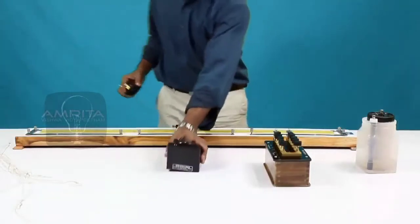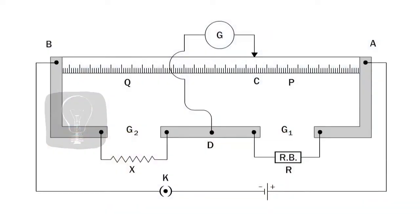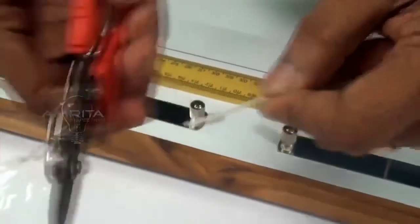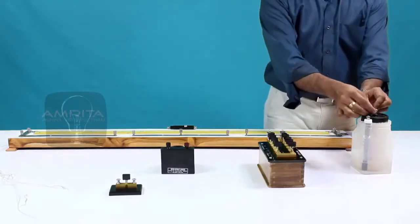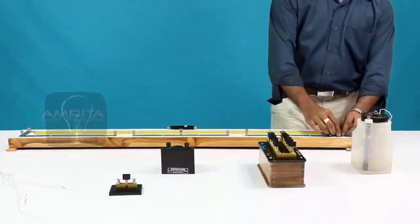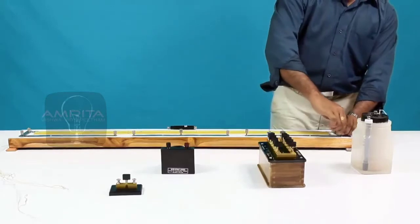First make the connections as shown in the circuit diagram. Take a connecting wire and cut it using a wire cutter. Connect one end of the wire to the positive terminal of the Leclanche cell and the other end to terminal A of the meter bridge.